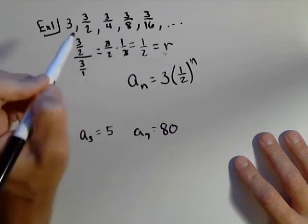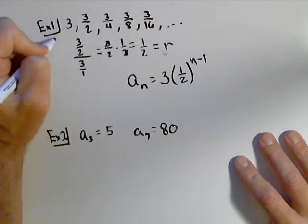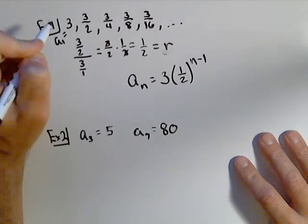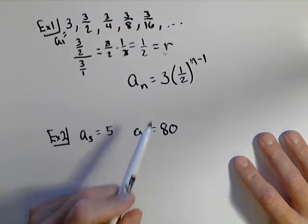And now it's not going to be to the n, it'll actually be to the n minus one, because three is our first term, or what we call a sub one. It's not actually the y-intercept. So this would be one way of writing it.